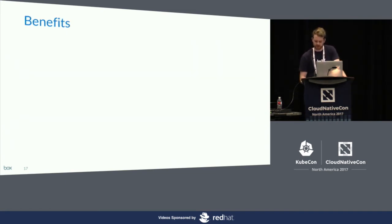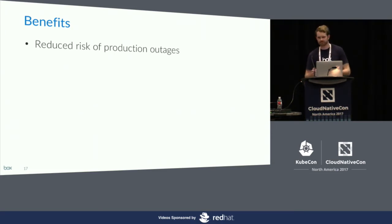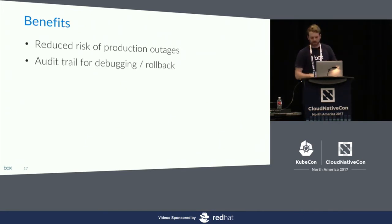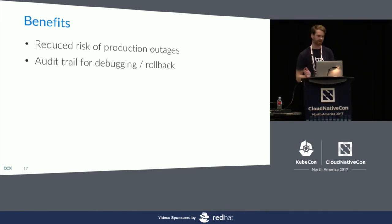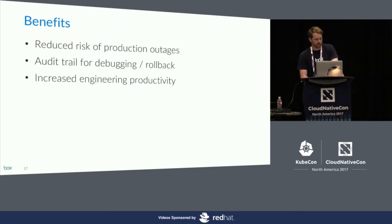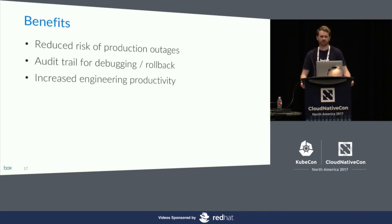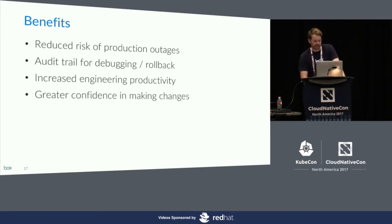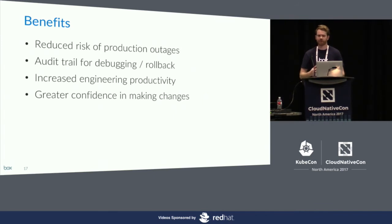To sum up the benefits we've seen from this change control process: first, greatly reduced risk of production outages, since rolling out incrementally means bad changes are much less likely to make it all the way to our main production deployment. Second, because we have a versioned history of the state of our system at any point, we have a really good audit trail for debugging, rolling back, or understanding the impact of a change. Third, we've increased engineering productivity — engineers focus on more important problems instead of babysitting deployments all day. And lastly, our engineers have greater confidence in making changes, feeling innovative and able to build cool things.